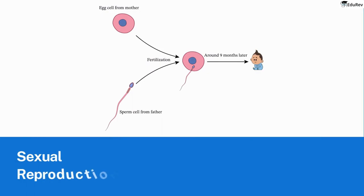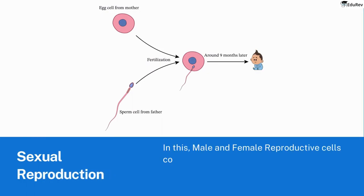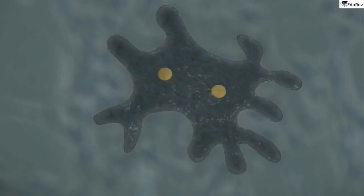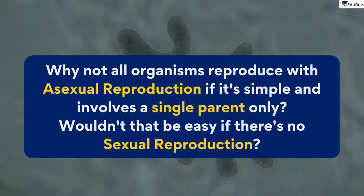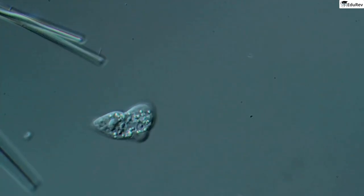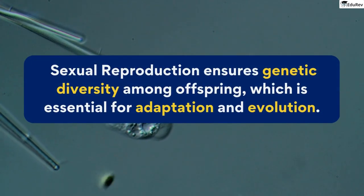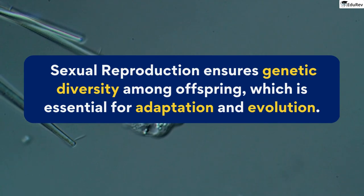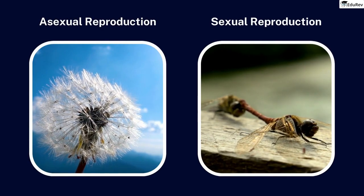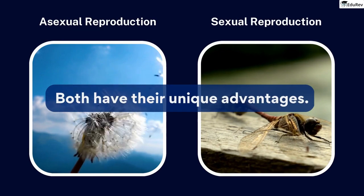Sexual reproduction requires two parents — male and female reproductive cells combine to form a new individual. It is seen in most animals and some plants like humans, dogs, cats, and flowering plants. You might wonder why not all organisms use asexual reproduction if it's simple and involves a single parent. Well, sexual reproduction ensures genetic diversity among offspring, which is essential for adaptation and evolution. Asexual and sexual reproduction may be different, but they both have their unique advantages.